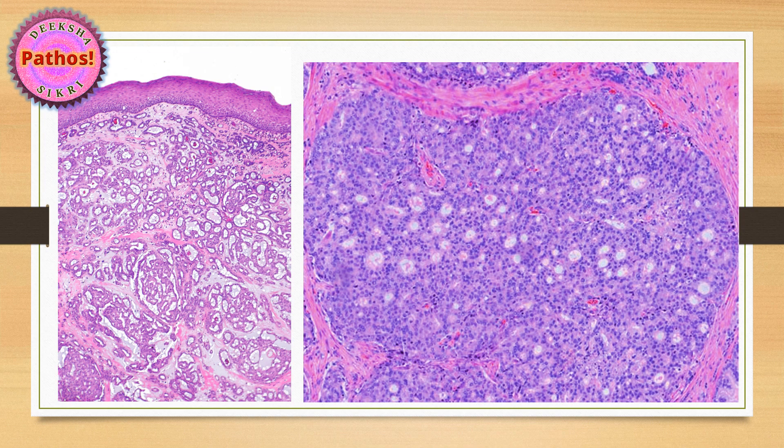This is a biopsy from the prostate — for postgraduates, you can see a cribriform pattern mixed with a lot of solid pattern. This would correspond to Gleason's grade 4. You assess and then give it a complete score and then give it a modified grade group as well. This is how cribriform terminology is used to describe this morphology.